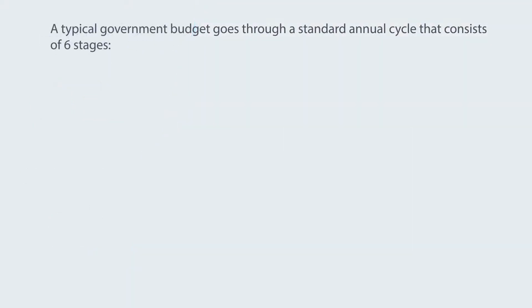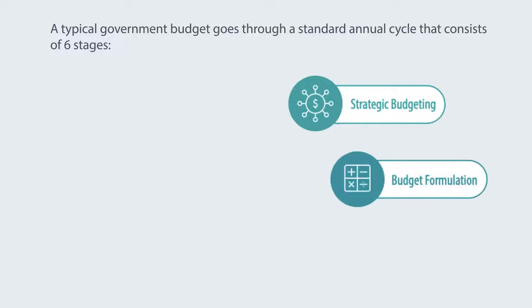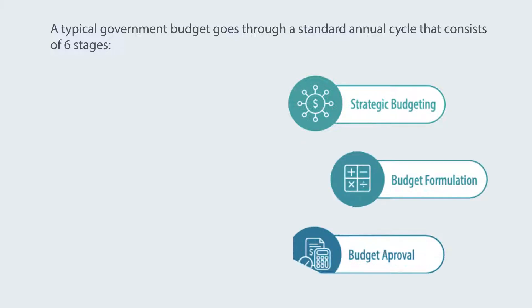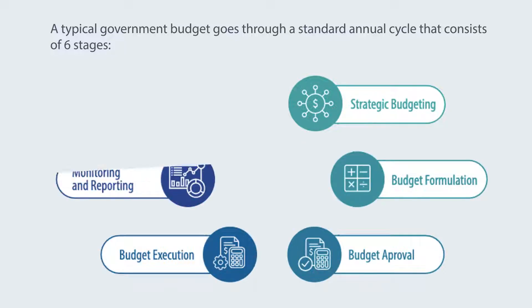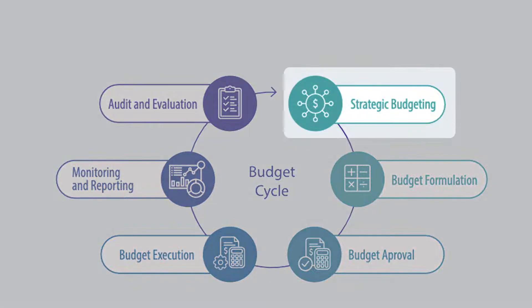A typical government budget goes through a standard annual cycle that consists of six stages: strategic budgeting, budget formulation, budget approval, budget execution, budget monitoring and reporting, and budget audit and evaluation.